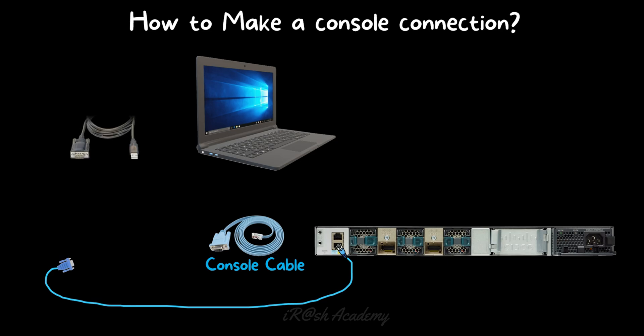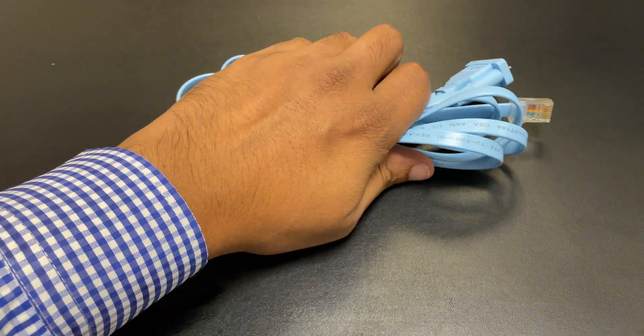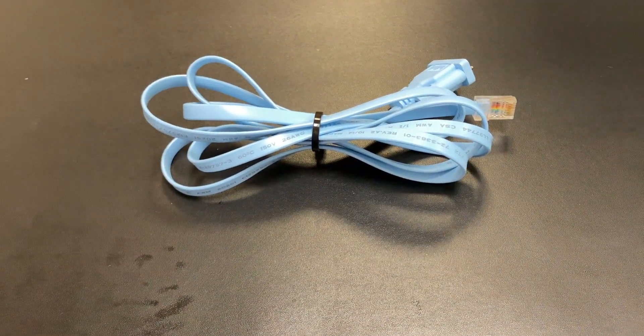In addition to this console cable, you need one USB-to-serial adapter. In the USB-to-serial adapter, one side is a serial interface and the other side is USB. The USB part you need to connect to your computer, and the serial interface you need to attach to the serial interface of the console cable. I am going to attach the serial interface of the console cable into the serial interface of the USB-to-serial adapter, then the USB is connected to the laptop USB port. This is how we connect a console connection between the laptop and the network switch.